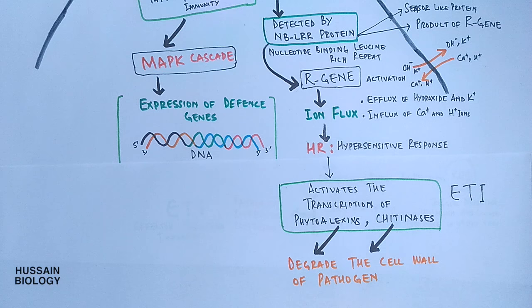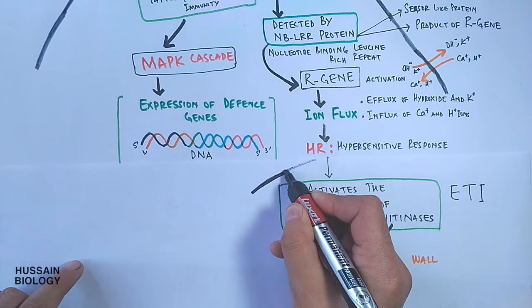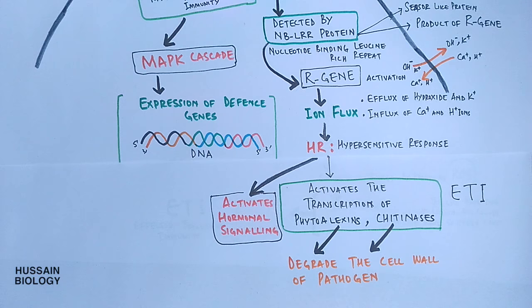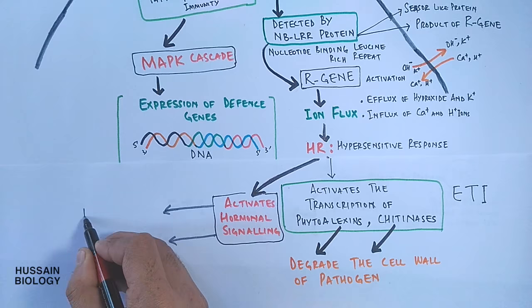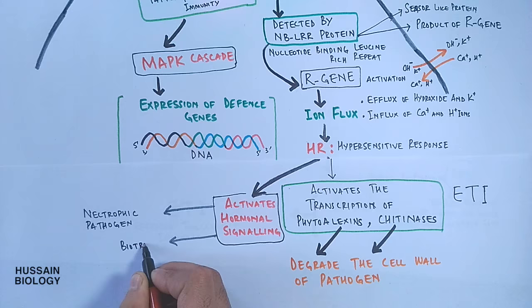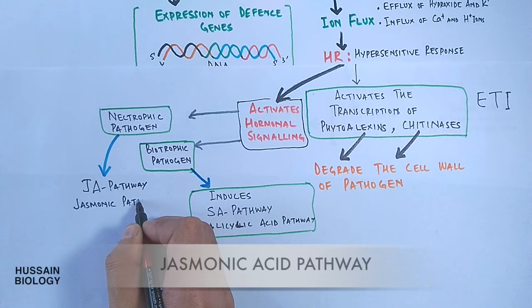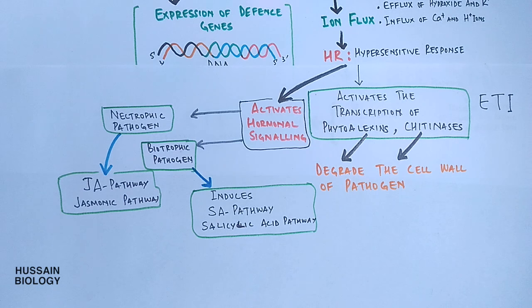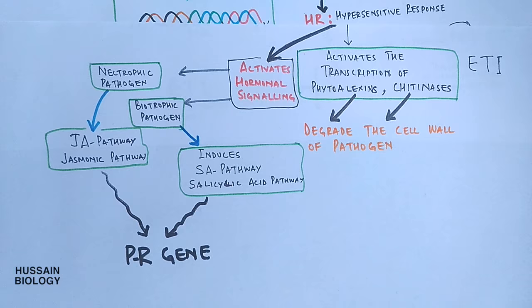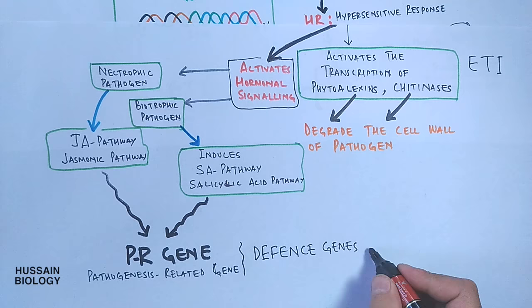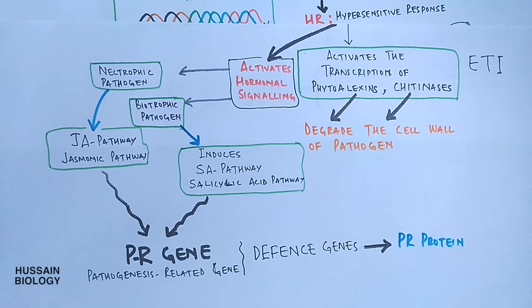Phytoalexins and chitinases even affect the exoskeleton of some arthropods. Now the question is how these defensive proteins are produced within the plant cell. When hypersensitive response fails to eradicate the infection, it activates the hormonal signaling pathway, and different pathogens activate different pathways. There are two types of pathogens: necrotrophic pathogens, which completely destroy the plant cell, and biotrophic pathogens, which do not instantly cause much destruction of plant tissue. Biotrophic pathogens induce the SA pathway — salicylic acid pathway — while necrotrophic pathogens induce the JA pathway — jasmonic acid pathway. Both these different types of pathogens initiate different hormonal pathways, and furthermore these pathways activate the transcription of PR genes — pathogenesis-related genes — which are defense genes in plants. Finally, PR genes express PR proteins like chitinases which combat the pathogen infection in several ways.